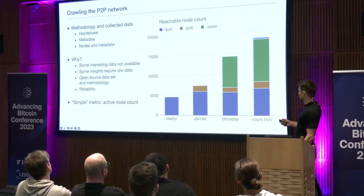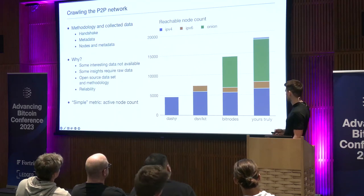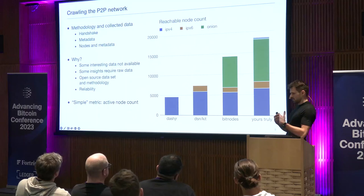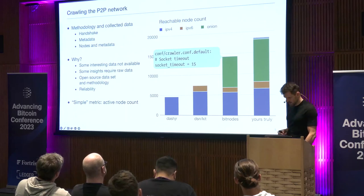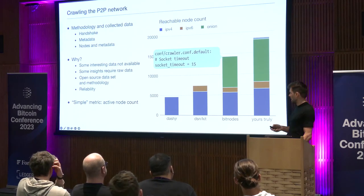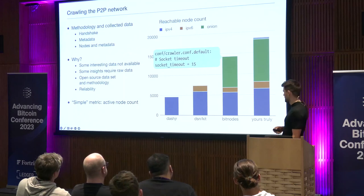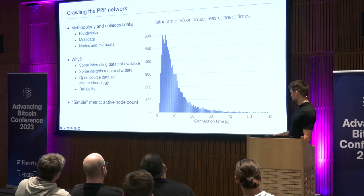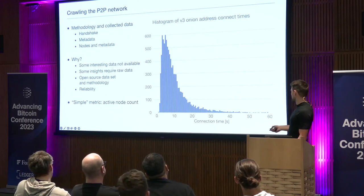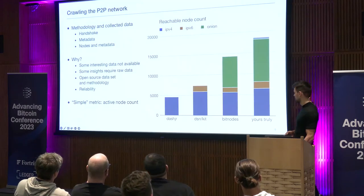Then there are Onion nodes, which only BitNodes provides, but the gap widens even more. The previous effect of nodes-to-consider doesn't explain that large a gap. Looking at the BitNodes crawler code again, you'll find a 15-second timeout for connecting to a node. This is fine for IPv4 and IPv6, but due to the design of the Tor network, latencies are much higher. If you plot a histogram of connection times, many nodes connect in under 10 seconds, but cutting off at 15 seconds loses a lot of Tor nodes, which explains the discrepancy.